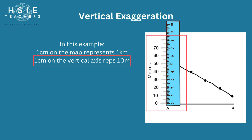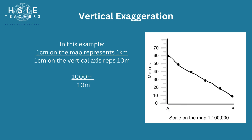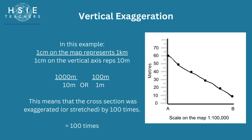We want both the numerator and the denominator to be in the same units — meters. So our equation becomes 1,000 over 10, or 100 over 1. This means that the cross-section was exaggerated or stretched 100 times.